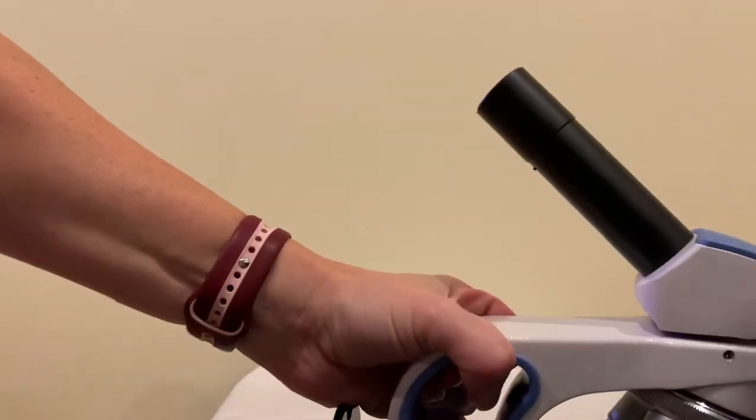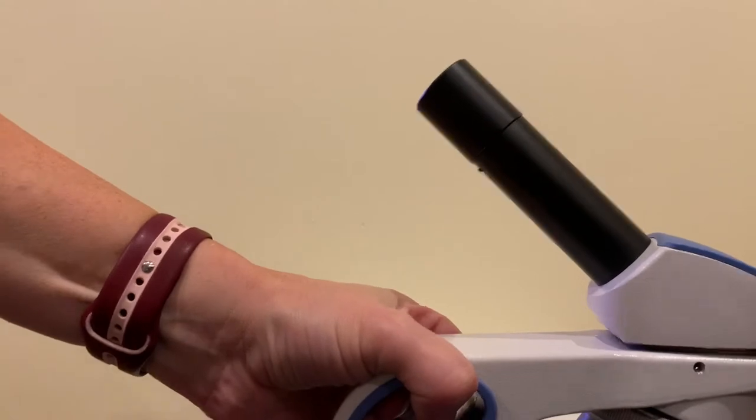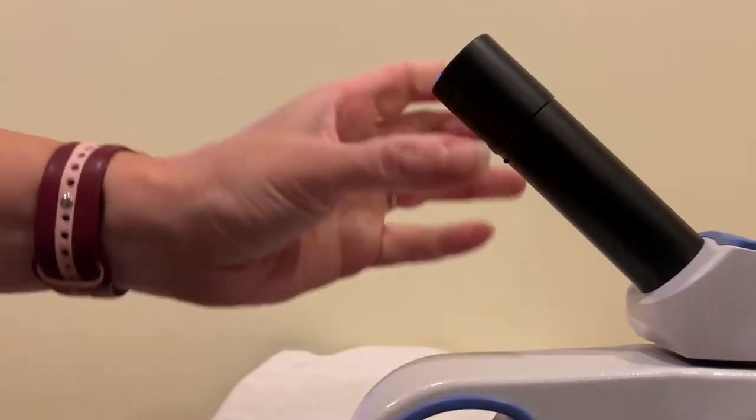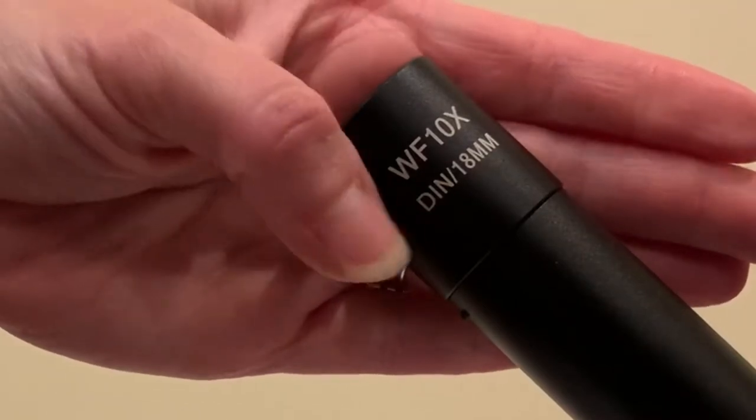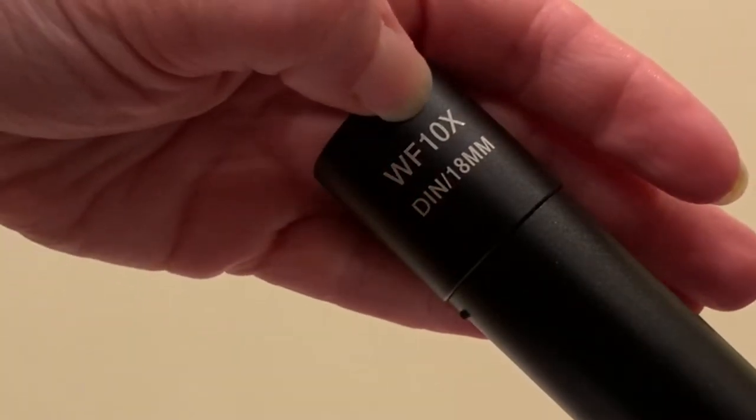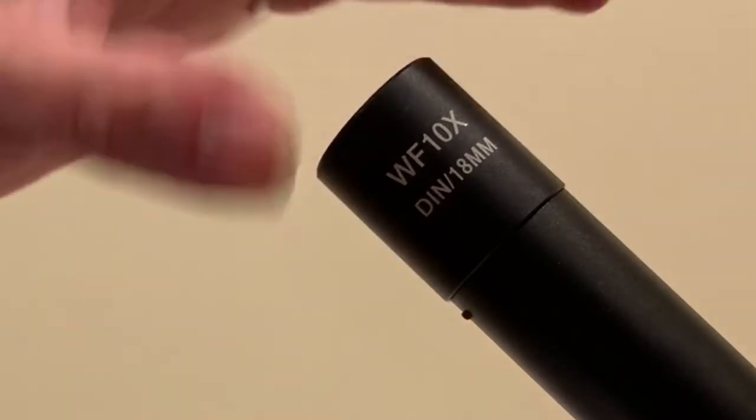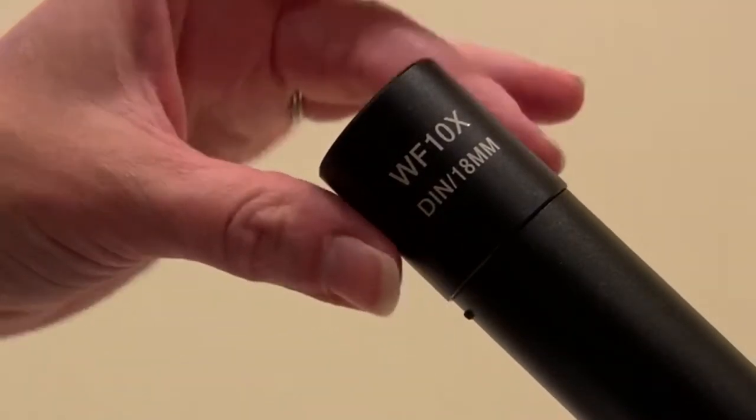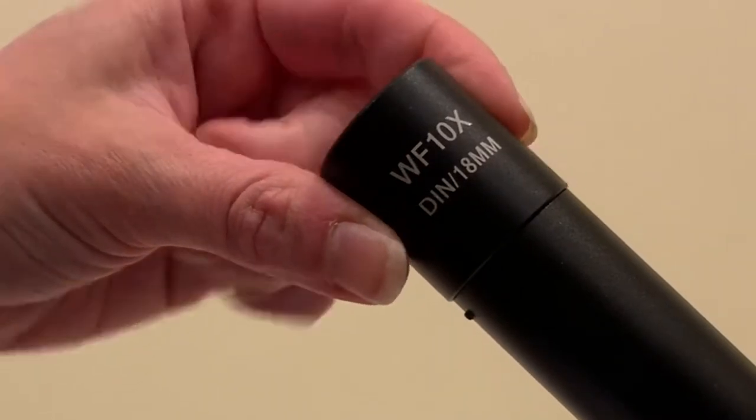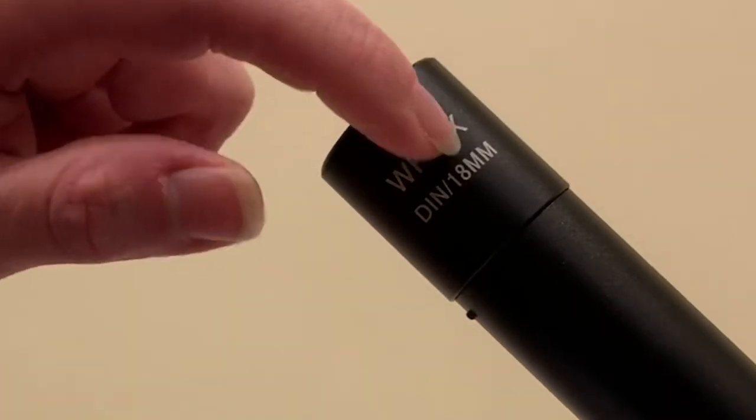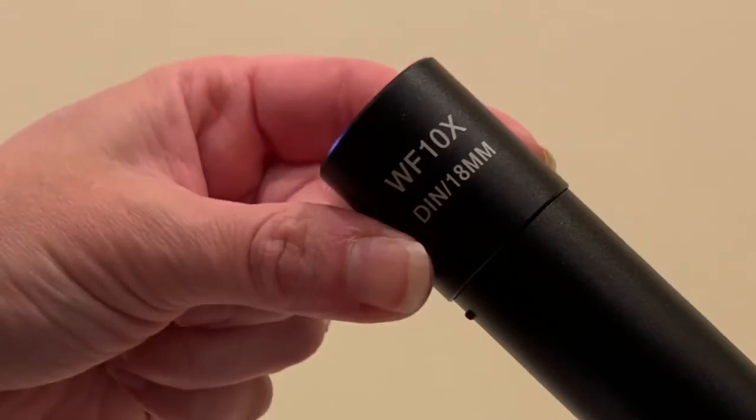Now if we look closely at the ocular lens here you will see that it says 10x. That means that this lens right here magnifies objects 10 times their normal size.